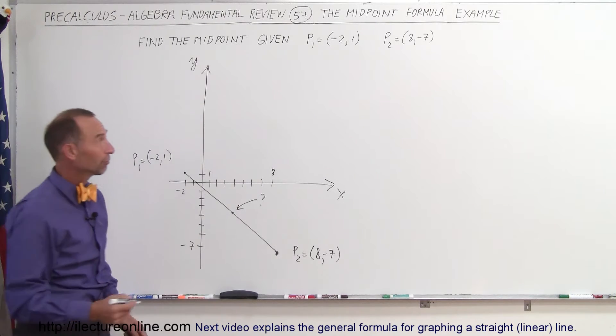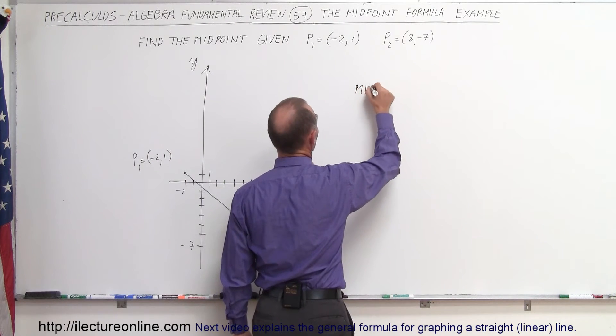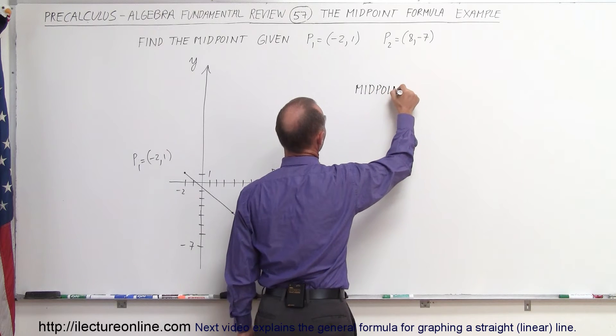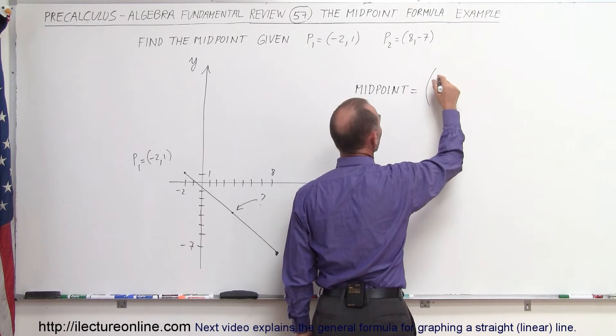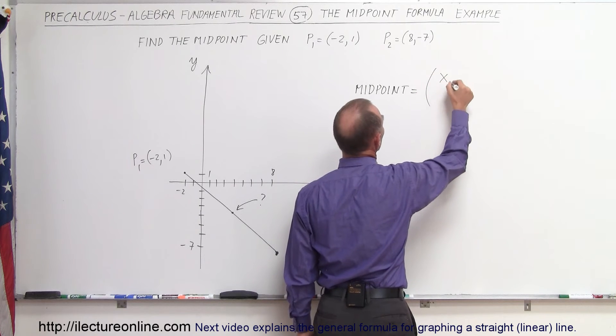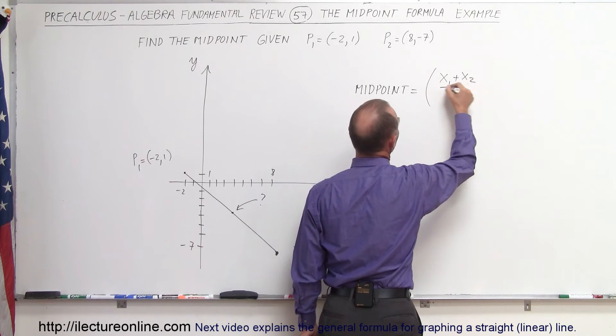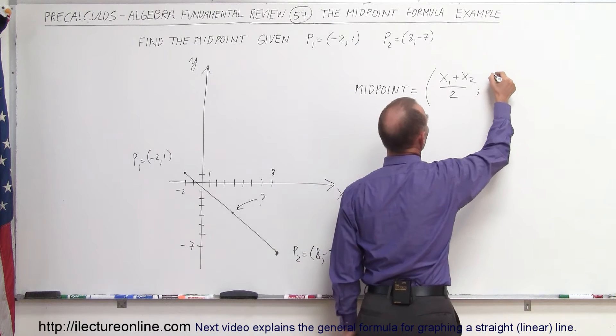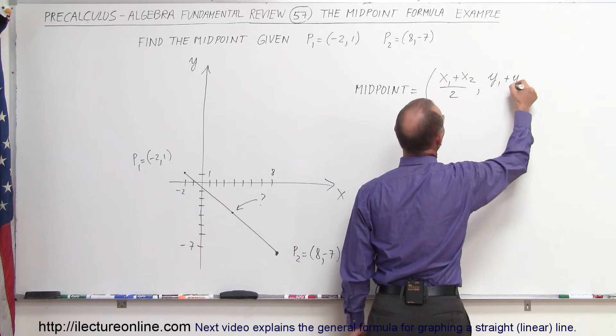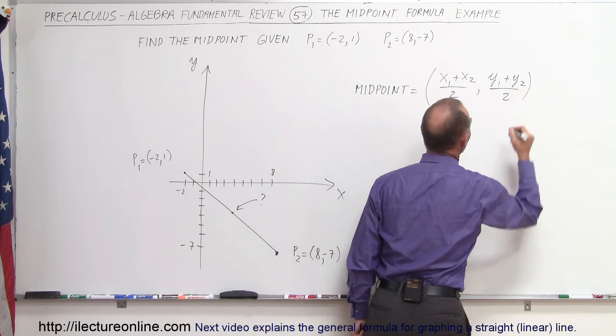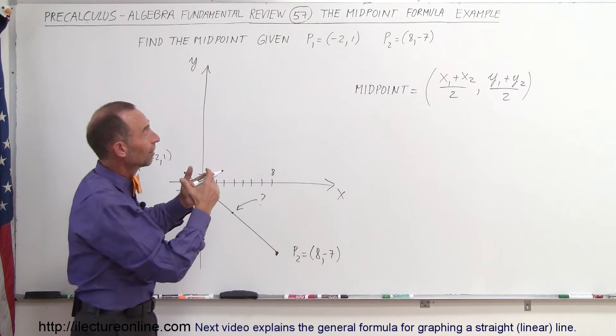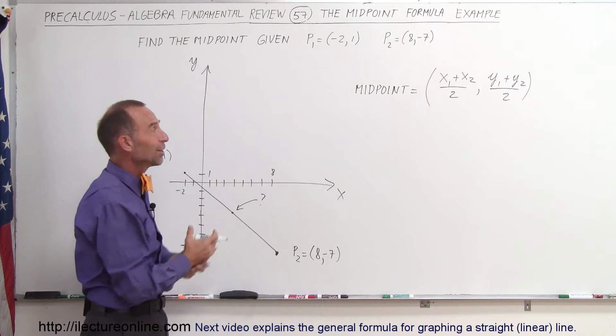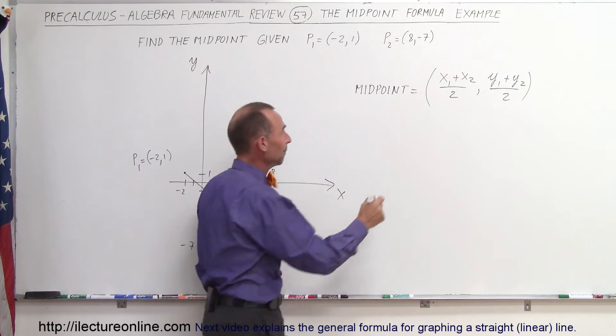Well, the midpoint formula is: the midpoint is simply equal to, you find the x coordinate by summing the two x values together and dividing it by 2, and you find the y coordinate by summing the two y values together and dividing by 2. That's the fancy name for just finding the coordinates like that, the midpoint formula.